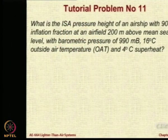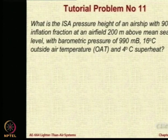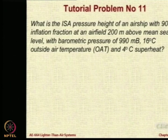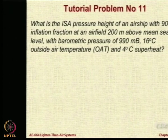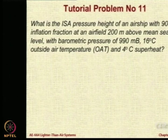We have an airship which has a 90% inflation fraction at an altitude located 200 meters above mean sea level. The barometric pressure recorded at that place is 990 mB, so instead of 101325, it is 990000. Temperature is 16 degrees centigrade and superheat is 4 degrees. These are the observations. With this, you have to tell me up to what pressure altitude this airship can be operated.